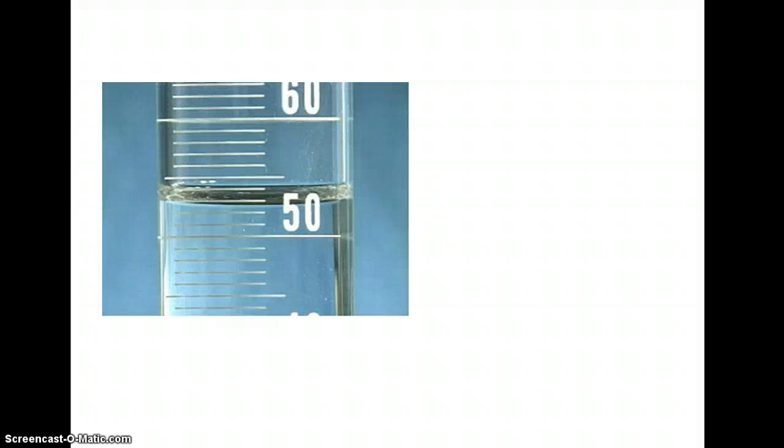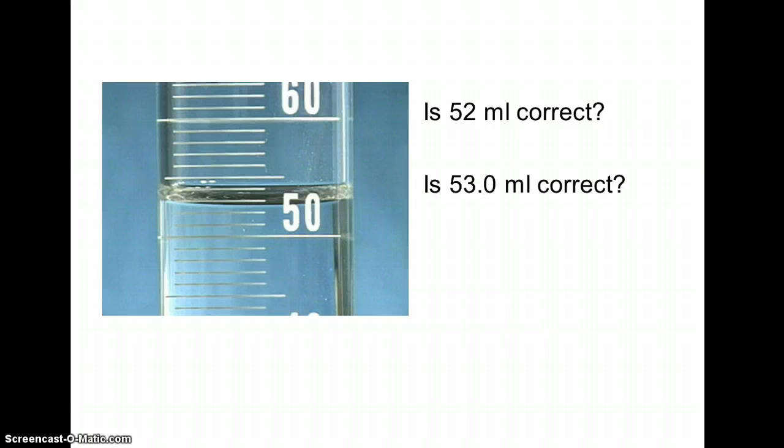Here's a photograph of a graduated cylinder. And we're left trying to take a measurement with it. We can see if 52 milliliters is correct. Well, looking at the meniscus right here, I'm above the 52 point. So that's probably not the best bet. It may seem easiest to work with that, but it's not the most correct.